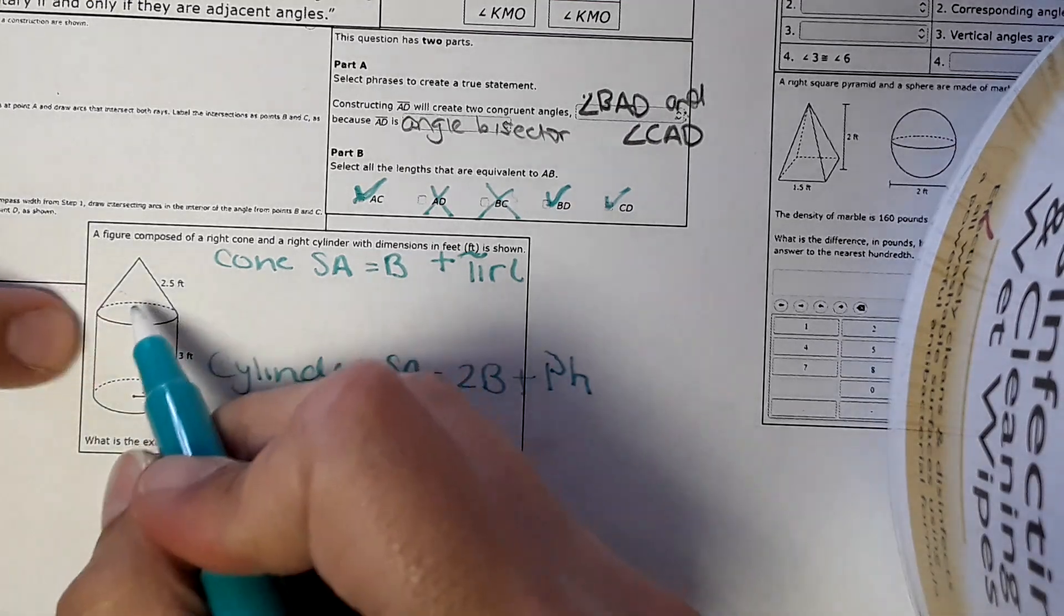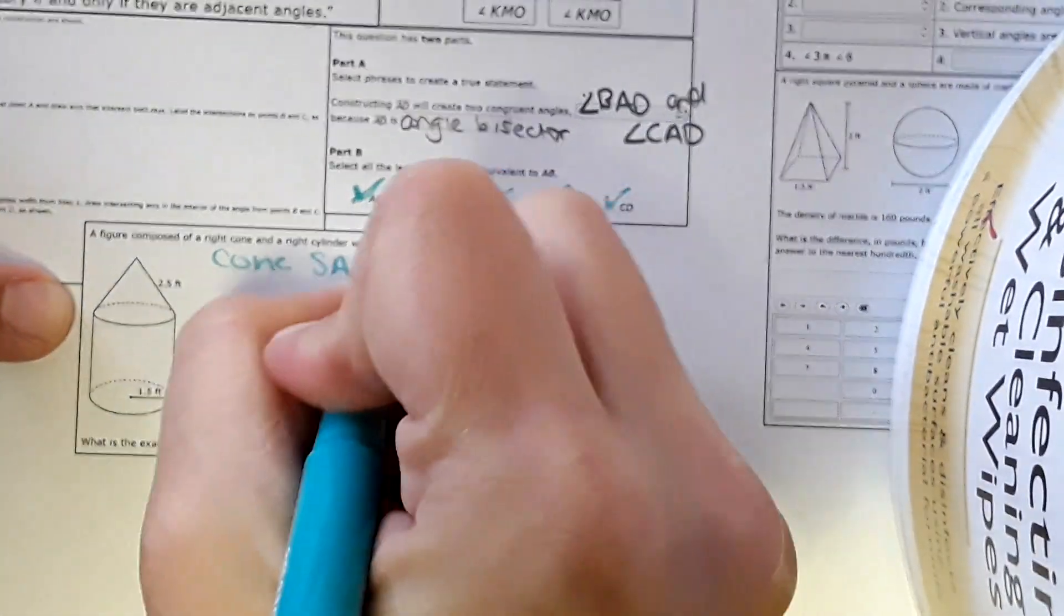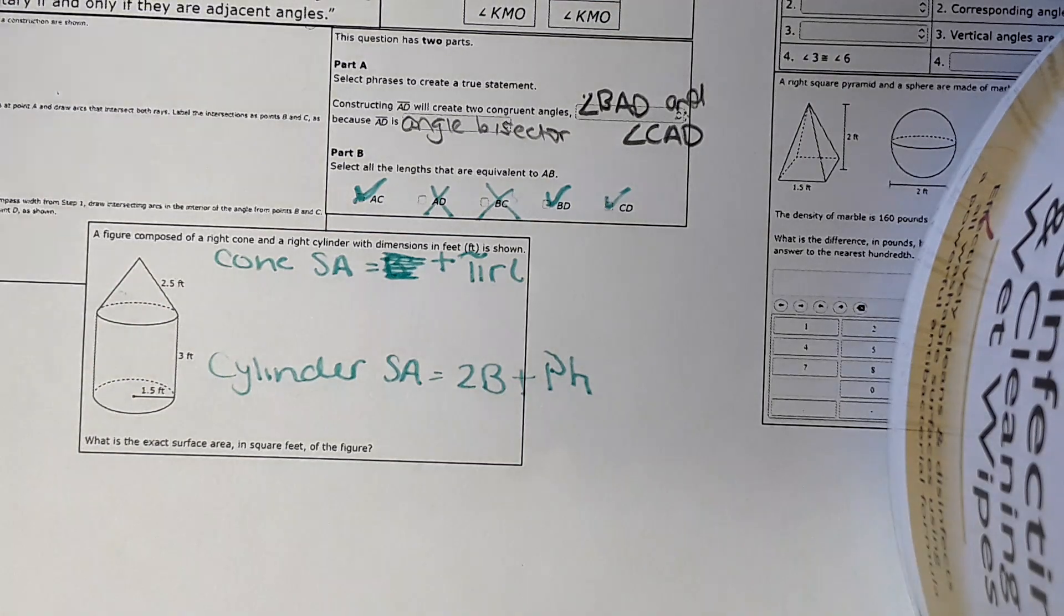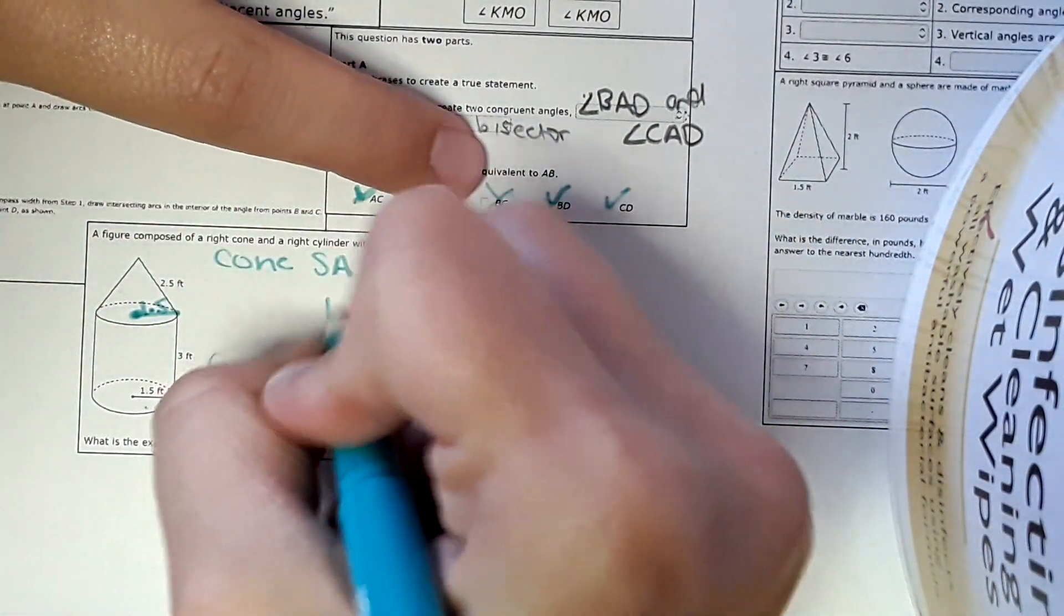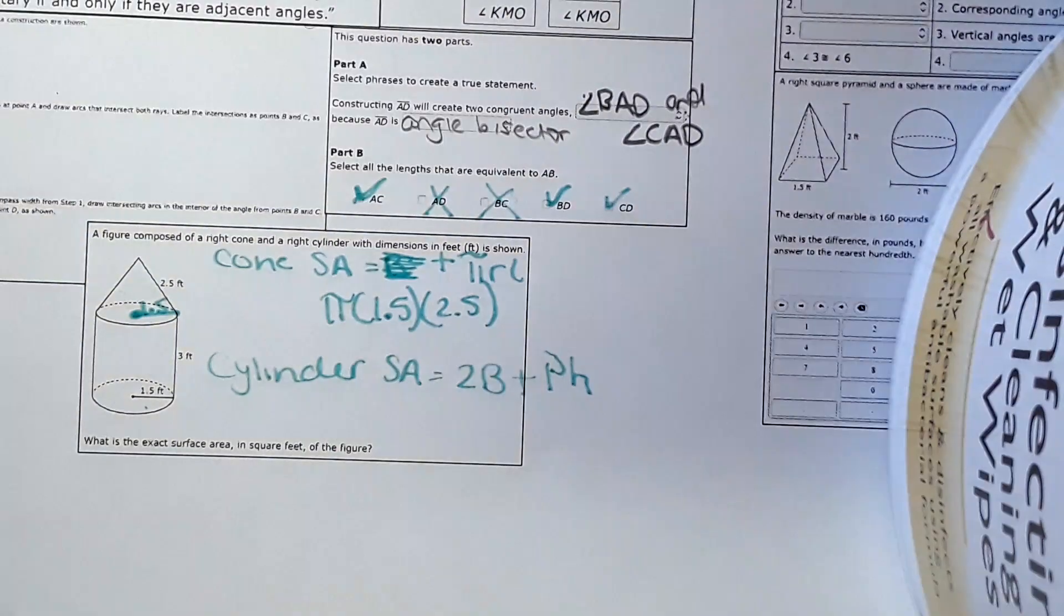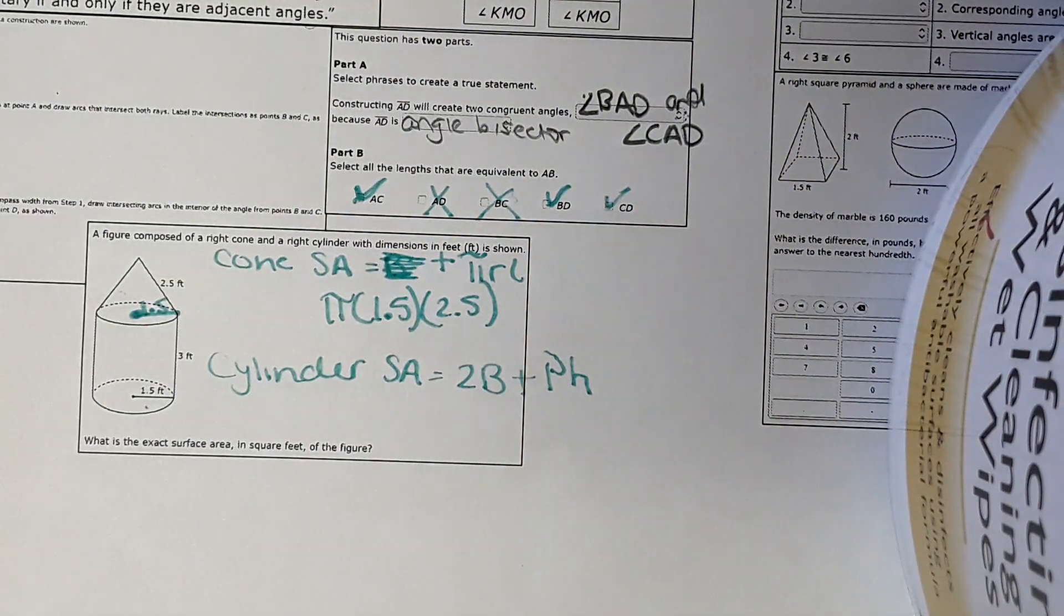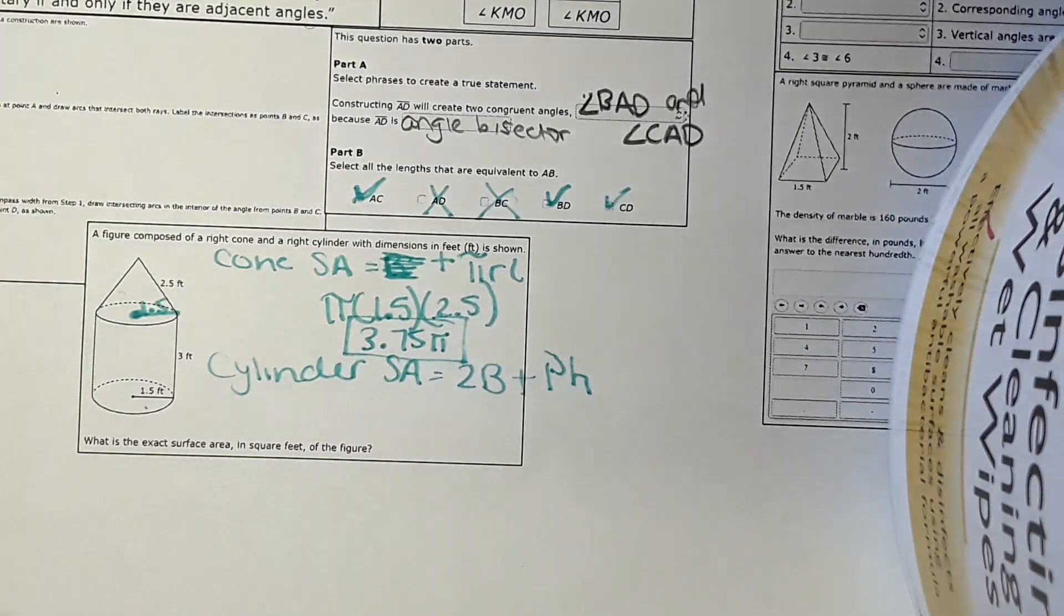So something to also note is for this cone, it actually doesn't have a base that's exposed. So that wouldn't be included in the surface area. So for this equation, we're just going to cross that out. We don't need to find the area of the base because it's not part of the surface area. Okay, so then we just have to do pi RL for this cone, which the radius would be the same as down there. So that would be 1.5. So pi times 1.5, and the slant height right here is 2.5. 1.5 times 2.5, I get 3.75 pi. I could calculate it out further, but I'm just going to leave it like that for right now.